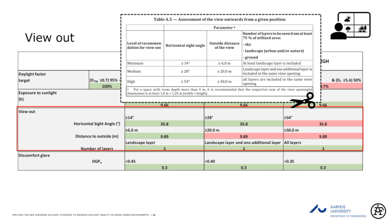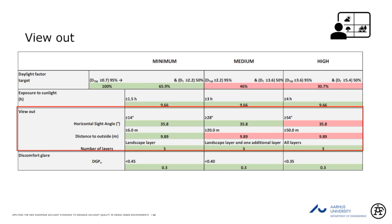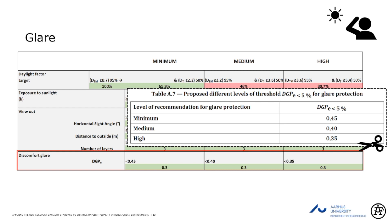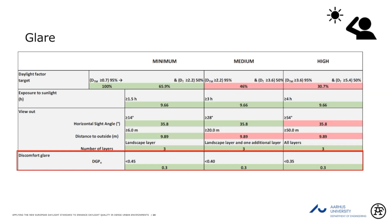For view out, we have a minimum horizontal sight angle of 14 degrees, 28 for medium, and 56 for the next level. The outside distance that you can see from the facade to neighboring buildings is between 6, 20, and 50 meters. The last criterion is DGP, where the minimum threshold is 0.45 — meaning 45% of people will likely experience discomfort glare. For the high level, only 35% experience that. In this case we have 0.3, so we're meeting all of them.